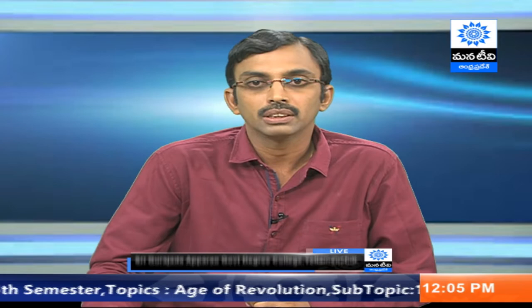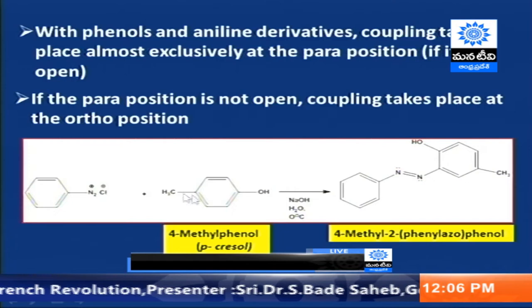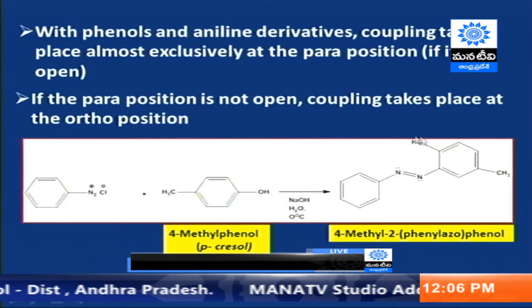Generally, coupling takes place at the para-position. Whenever the para-position is not free, coupling will occur at the ortho-position. For example, when the methyl group is ortho to the hydroxy group, the para-position is not free. Therefore, the diazonium ion will undergo electrophilic addition at the ortho-position to the OH, since the para-position is occupied by the methyl group.